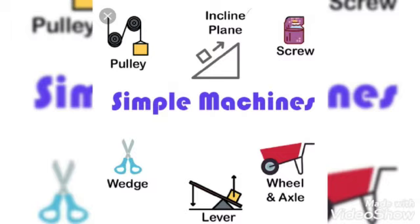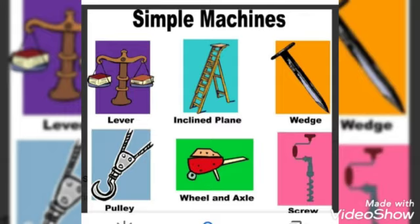Machines can be simple with a few or no moving parts or complex comprising two or more simple machines. Examples of simple machines are a knife, a blade, a hammer. A bicycle, a sewing machine and a hand pump are some examples of complex machines.